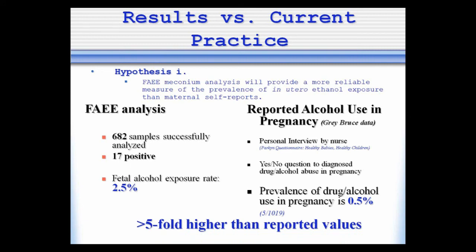What does this mean for the rate of fetal alcohol spectrum disorder in Canada? About 40% of babies whose mothers drink heavily have FASD. If 3% of moms drink heavily so their babies see a lot of FAEE, then 40% of 3% is 1%. And 1% is the more widely accepted figure for FASD in Canada — this time confirmed by a biochemical test.